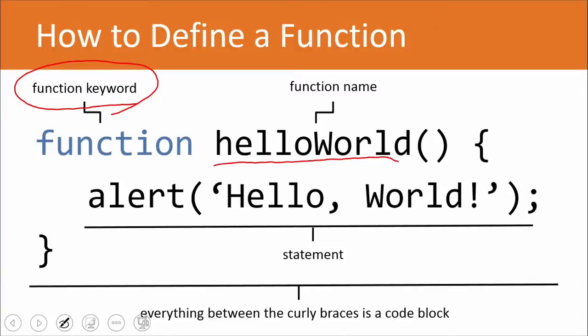And then we have a statement. Alert happens to be a method, and then we have what alert is going to present to us. So it's going to create an alert box that says hello world. Everything between the curly braces is often referred to as a code block.